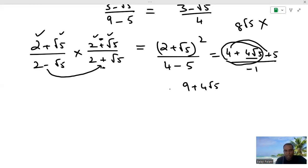So 9 plus 4 root 5 divided by minus 1. The minus 1 in the denominator, minus 1 definitely this is another mathematical etiquette. You have to bring it to the numerator. This is the final representation of the answer.